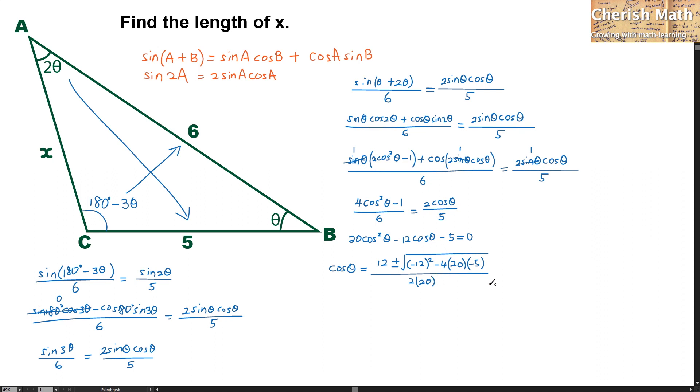Now, cos theta equals 12 plus minus 4 times the square root of 34 divided by 40.